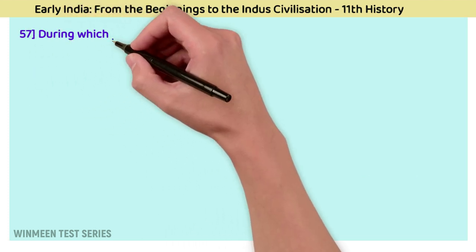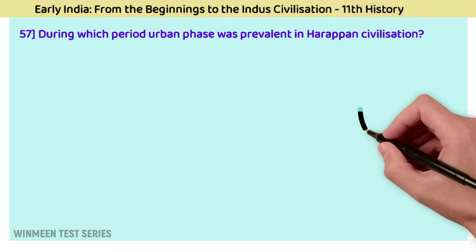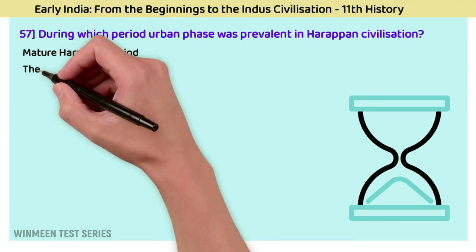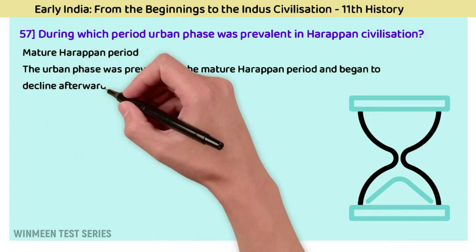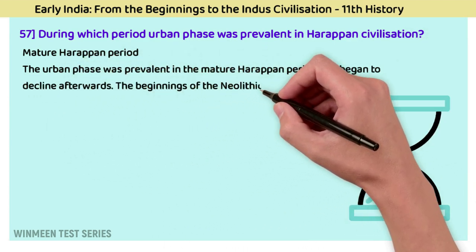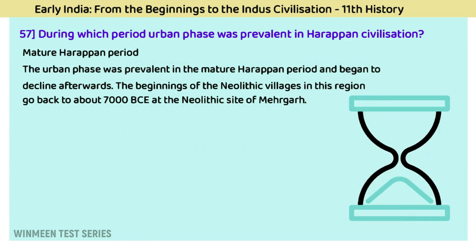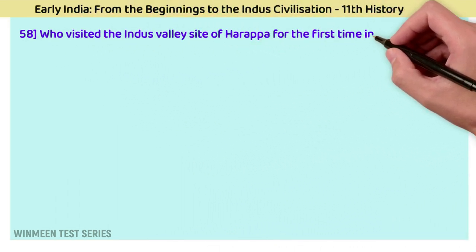Question 57: During which period was the urban phase prevalent in the Harappan civilization? The answer is the Mature Harappan period. The urban phase was prevalent in the Mature Harappan period and began to decline afterwards. The beginnings of Neolithic villages in this region go back to about 7000 BCE at the Neolithic site of Mehrgarh.